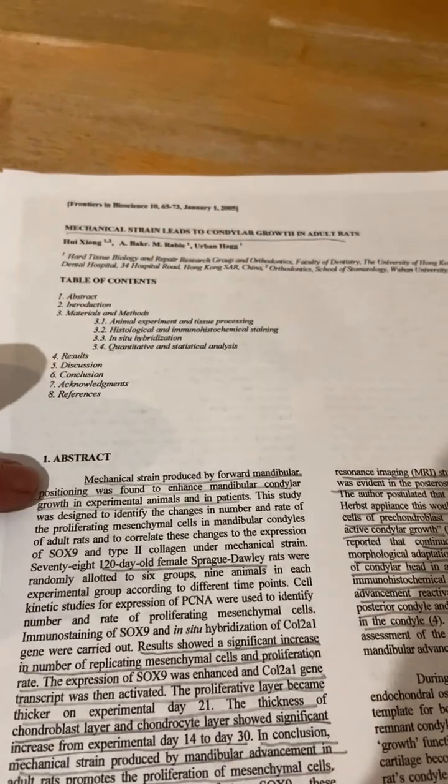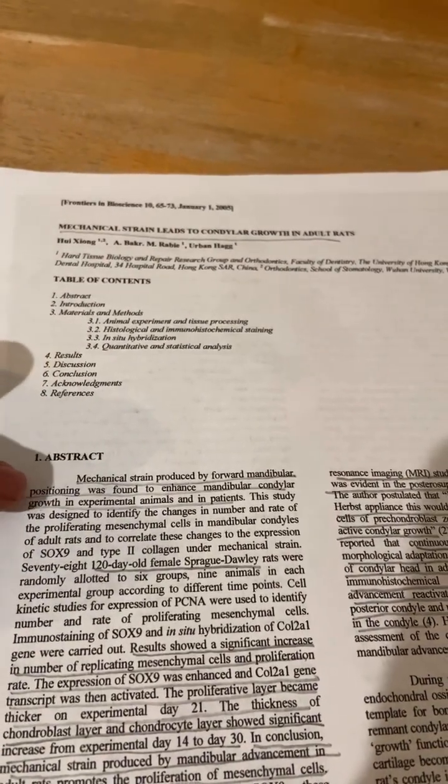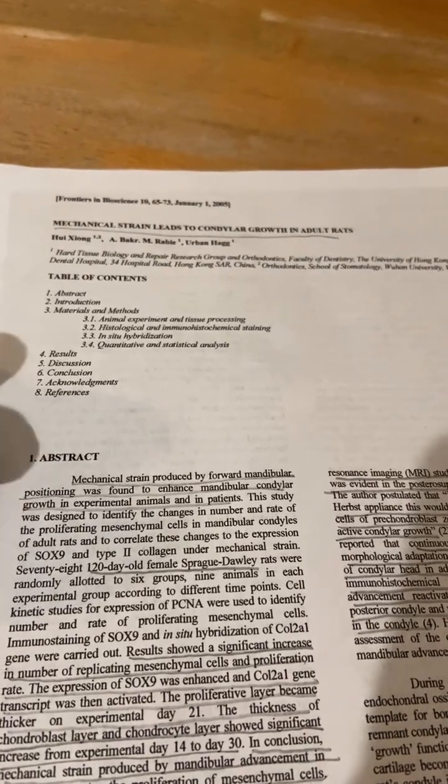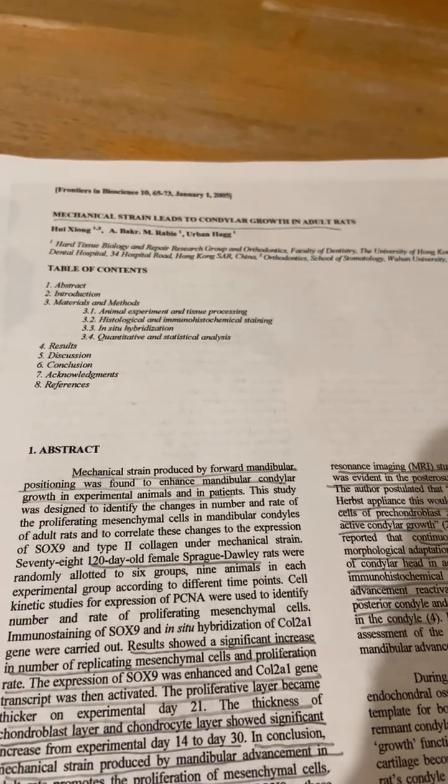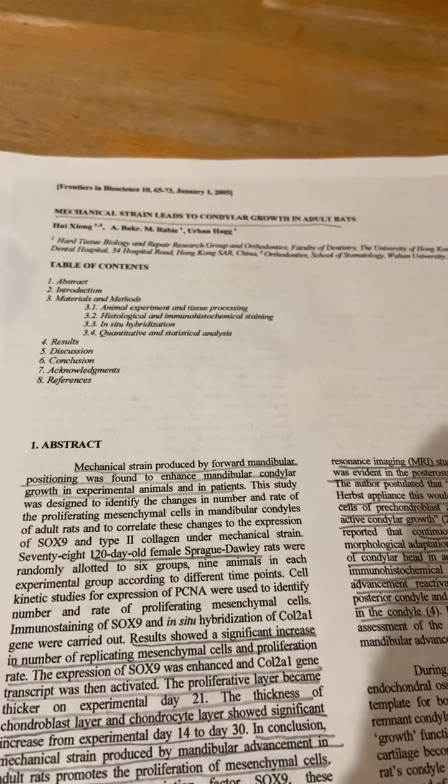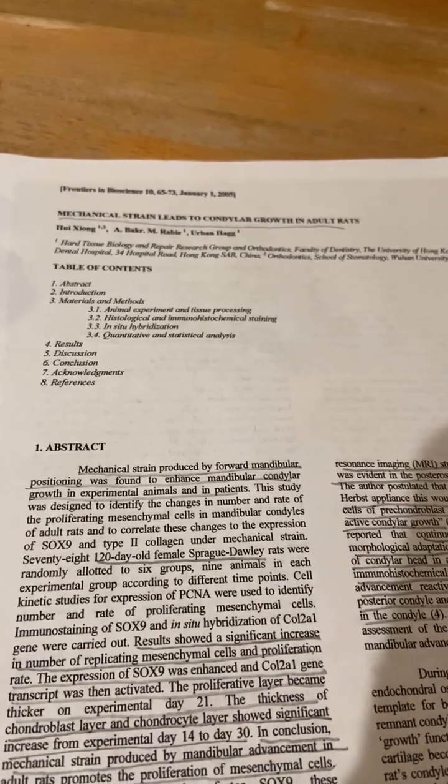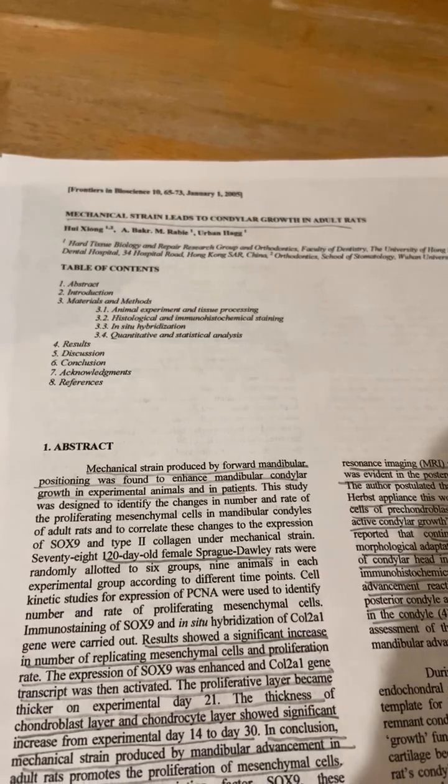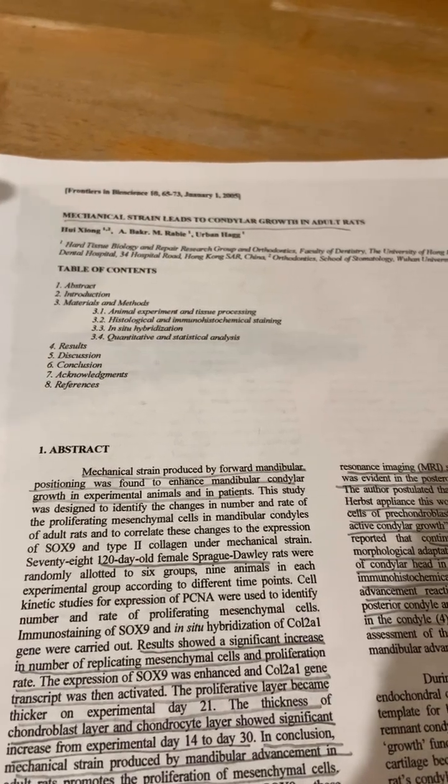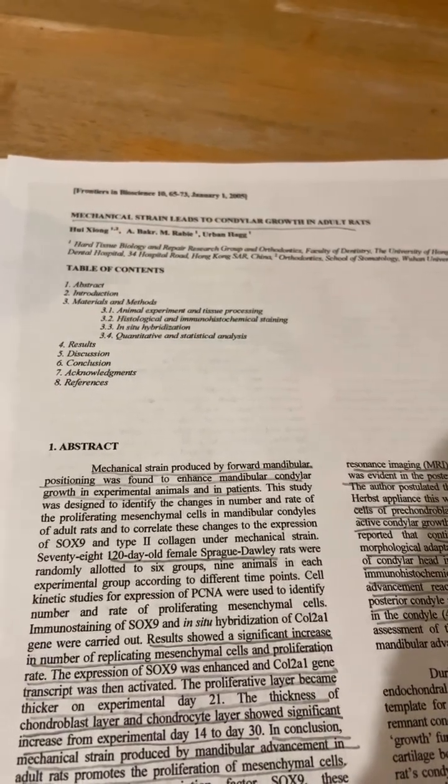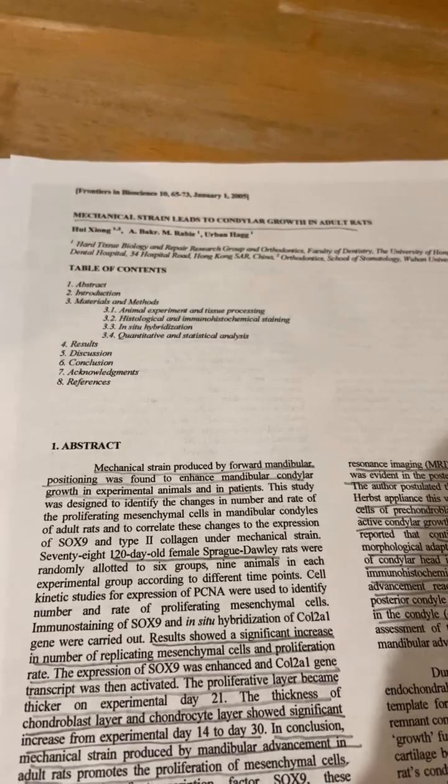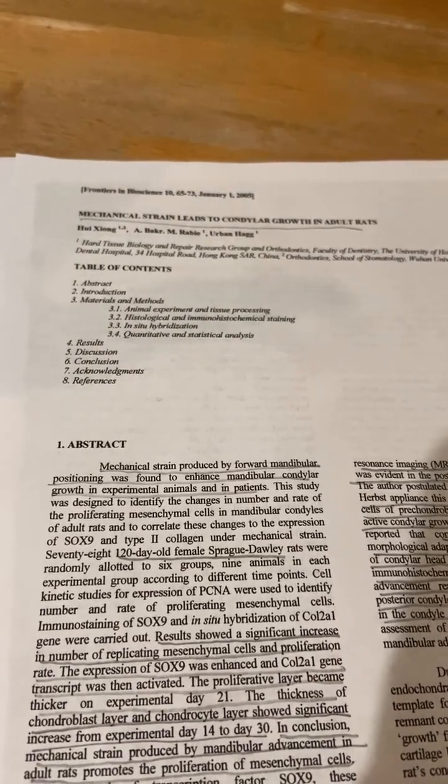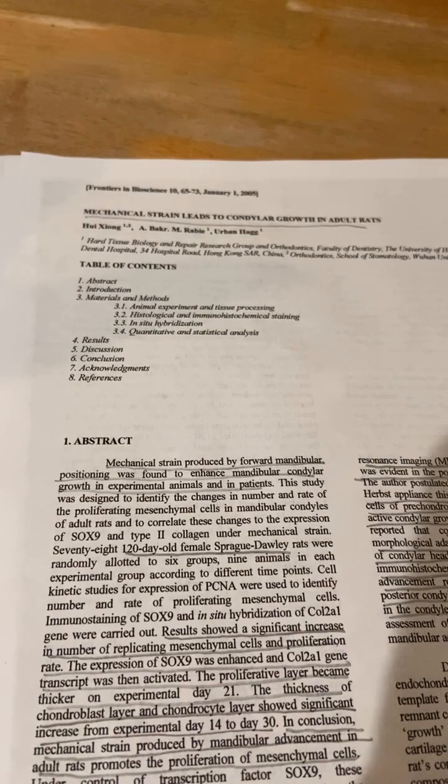The paper is called Mechanical Strain Leads to Condylar Growth in Adult Rats. Mechanical strain produced by forward mandibular positioning was found to enhance mandibular condylar growth in experimental animals and in patients. Now, forward mandibular positioning doesn't have to be by device. It could be just you manually moving your jaw forward in a dynamic manner. We see in acromegaly, people's jaws are bigger, and I think anecdotally, we see that weightlifters' jaws are bigger, but that could be selection bias.